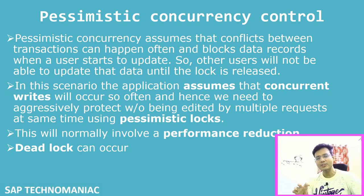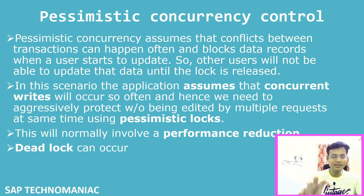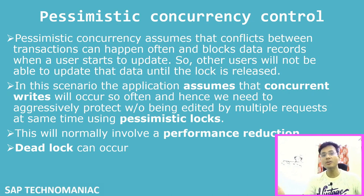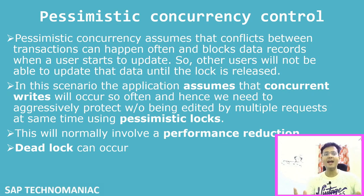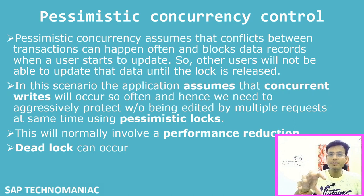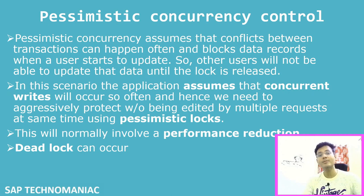Pessimistic concurrency control — we already use this in ABAP. In this scenario, we assume that when we are changing data, somebody else will also try to change that same data. To avoid this, before I even read the data I put a lock, and I keep that lock until I save the data. That is called pessimistic concurrency control — we assume there will be many concurrent users trying to change the same data. The disadvantage is performance reduction.